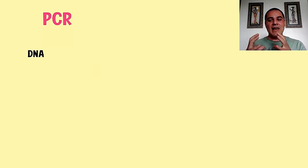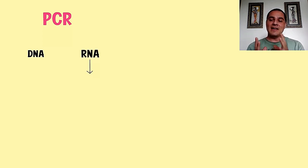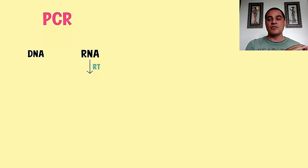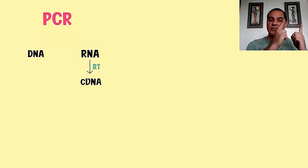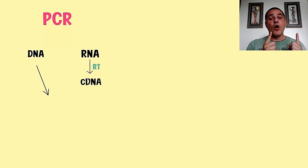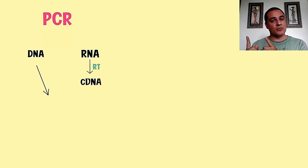Então, quando a gente quer trabalhar com RNA, a gente precisa fazer uma técnica chamada de transcrição reversa, onde a gente transforma o RNA em uma molécula de DNA complementar, que é chamada de cDNA. Então, quando a gente quer trabalhar com DNA de uma amostra, a gente coloca o DNA diretamente, ou se é uma amostra de RNA — que é no caso da quantificação do coronavírus — a amostra de cDNA.